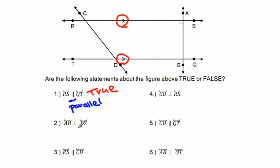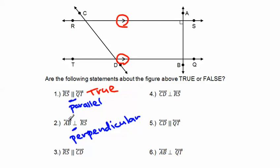Next: line AB is perpendicular to line RS. The perpendicular symbol means two lines cross at 90 degrees. Let's check — line AB and line RS: yes, they are crossing at a 90-degree angle. So these two lines are perpendicular to each other, and this is also a true statement.